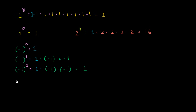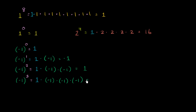Let's take negative 1 to the third power. You start with a 1 and multiply it by negative 1 three times: negative 1 times negative 1 times negative 1. Negative 1 times negative 1 is positive 1, times negative 1 is negative 1.